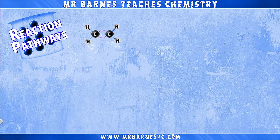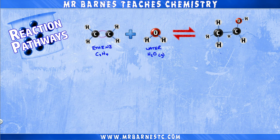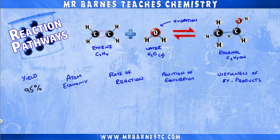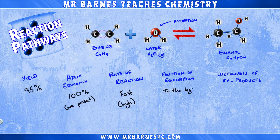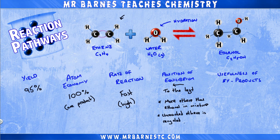Moving on to ethene: ethene is reacted with water and steam to turn it into ethanol, and as you can see, it's a reversible reaction. This process is called hydration. It has a yield of 95%, which is much higher than fermentation, as well as an atom economy of 100% because we've only got one product. The rate of reaction is high, so it will be reacting fast. However, the position of equilibrium is to the left, meaning that more ethene than ethanol will be present at any time in the reaction. The unreacted ethene can be recycled through until it does react, which allows us to get our 95% yield. And finally, because there are no byproducts, we don't need to consider that.